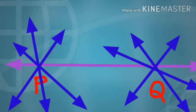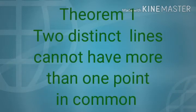Through P and Q, we can draw only one line. That is the meaning of this axiom. The next topic is Theorem 1. The statement of Theorem 1 is: Two distinct lines cannot have more than one point in common.